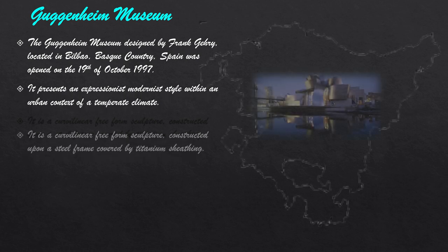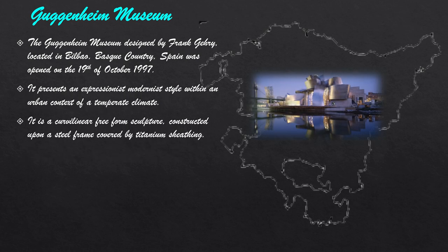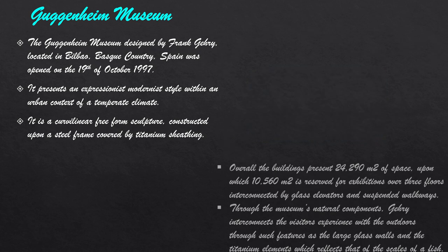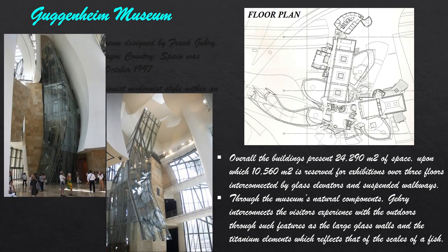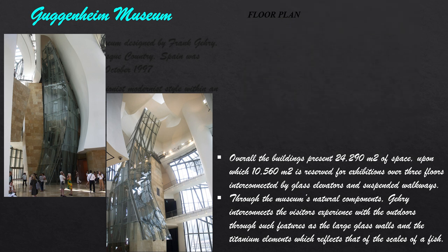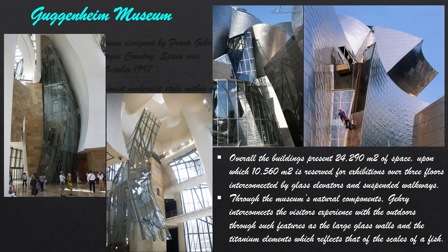The Guggenheim Museum, designed by Frank Gehry and located in Bilbao, Spain, was opened on 19 October 1997. It presents an Expressionist modernist style within an urban context. It is a curvilinear free-form sculpture constructed upon a steel frame covered by titanium sheathing. The building presents 24,290 m² of space, of which 10,560 m² is reserved for exhibition over three floors, interconnected by glass elevators and suspended walkways. Through the museum's natural components, Gehry interconnects the visitor's experience with the outdoors through large glass walls and titanium elements which reflect the scales of a fish.